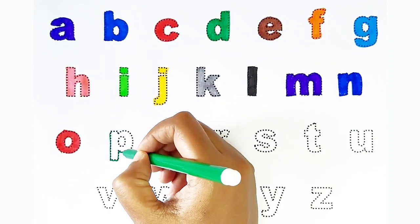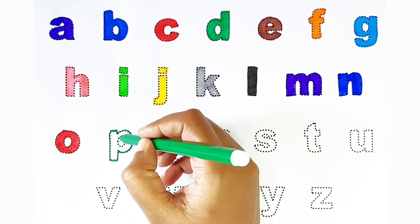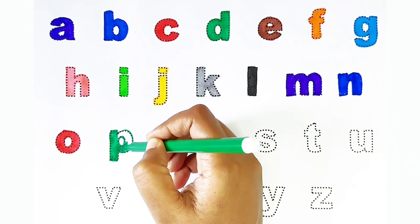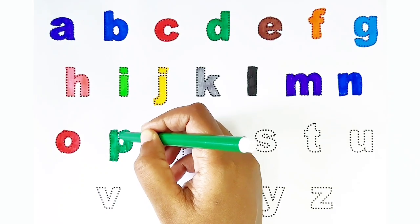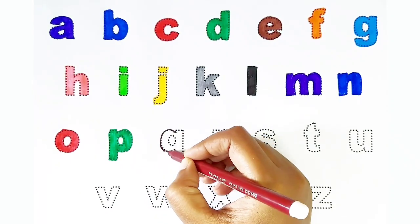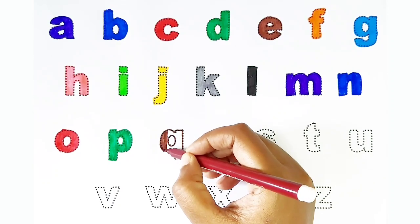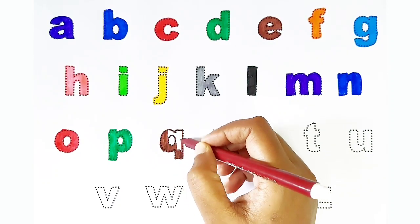P. Green color. P is for pig. Q. Brown color. Q is for question.